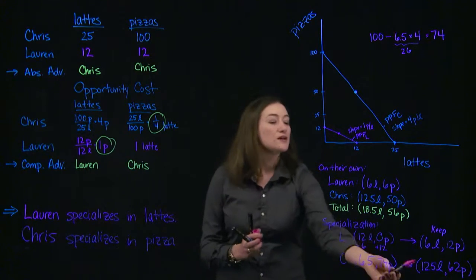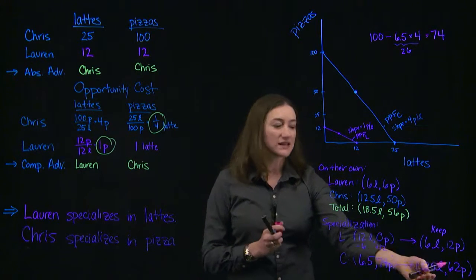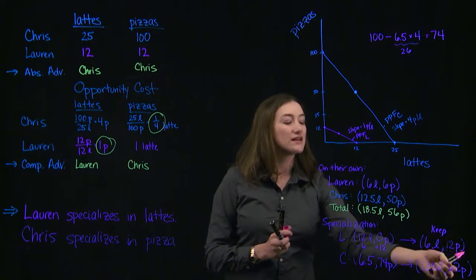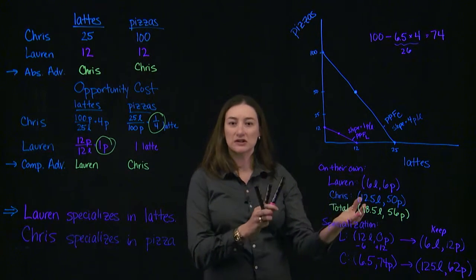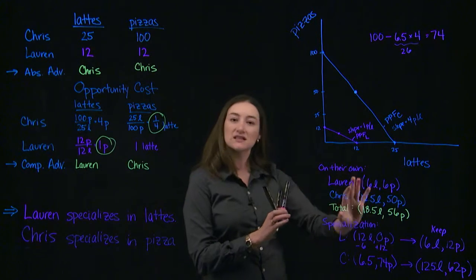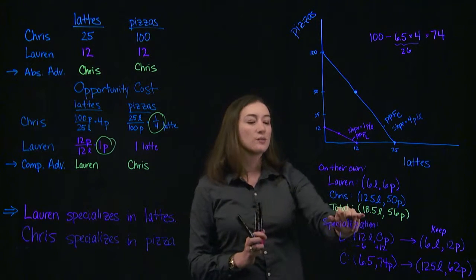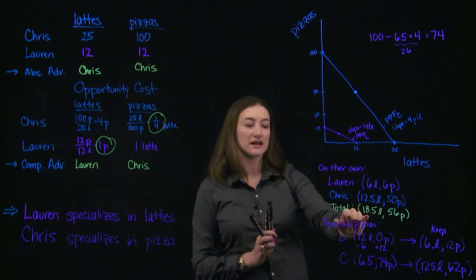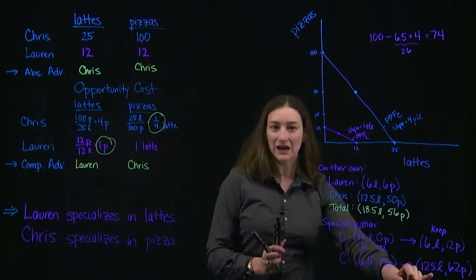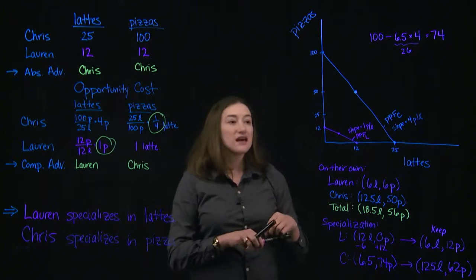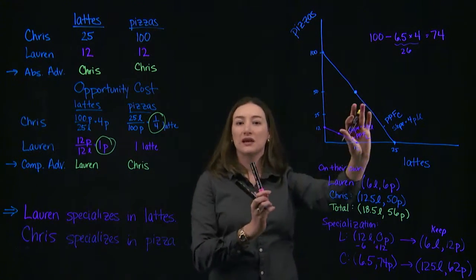Notice that both of these individuals are now better off than they were before. They both have the same amount of lattes, but they each ended up with more pizzas. This is the advantage of specialization and trade — when they specialize, they're able to produce more in total than before. Before, in total, they were only producing 18.5 lattes and 56 pizzas. Now they're producing 18.5 lattes and 72 pizzas — they're producing at a point further out than either would have been able to do on their own.